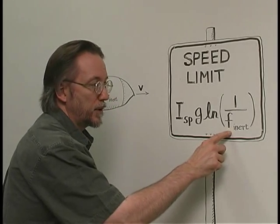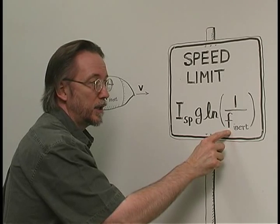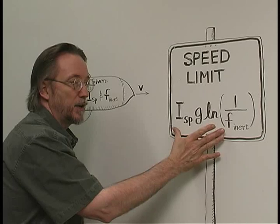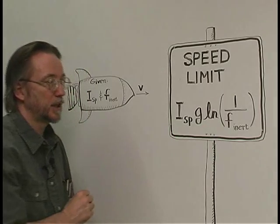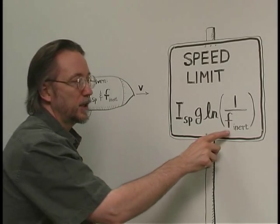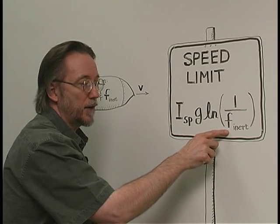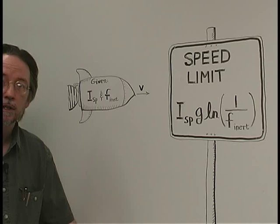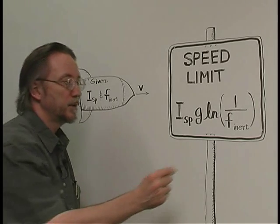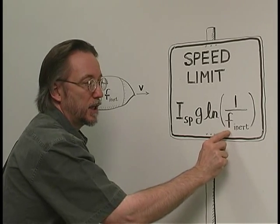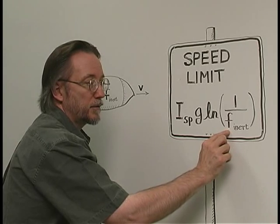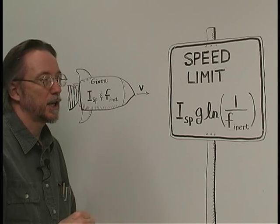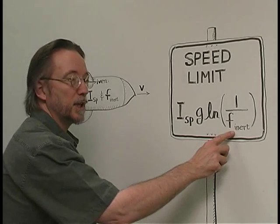If this number is very small, then one over this number becomes large, and so this value can be a very high velocity. In fact, in the limit as F inert approaches zero, it would mean that there would be no speed limit at all. But in actual rockets, the inert mass fraction is usually from 5 to 10 percent. In some particular cases, it could be as low as 3 percent.